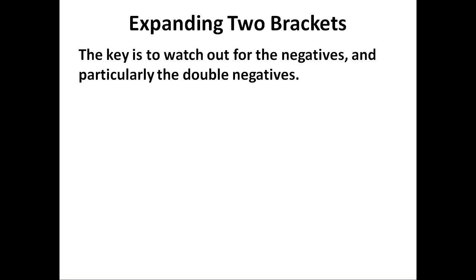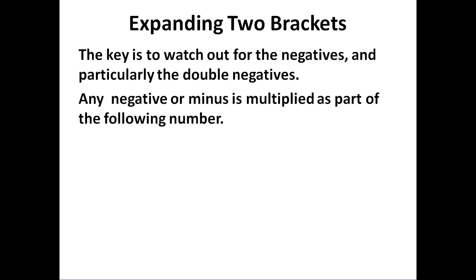Again, we need to watch out for negatives and particularly double negatives. They go as part of the following number. So we FOIL: first, outside, inside—it's minus 2 times x—and last, minus 2 times minus 7 is plus 14. We combine like terms, being very careful to remember that minus 7 minus 2 is minus 9. Two negatives only cancel when they multiply.